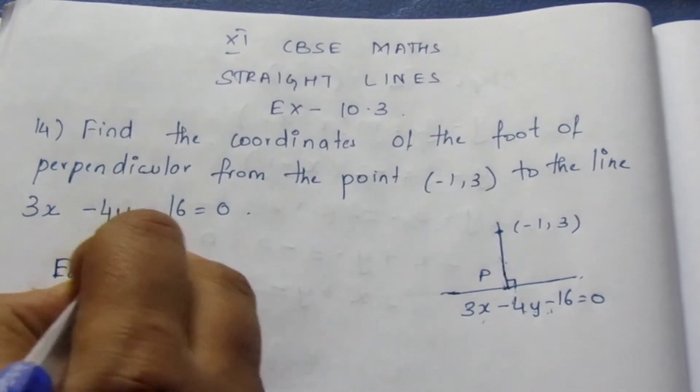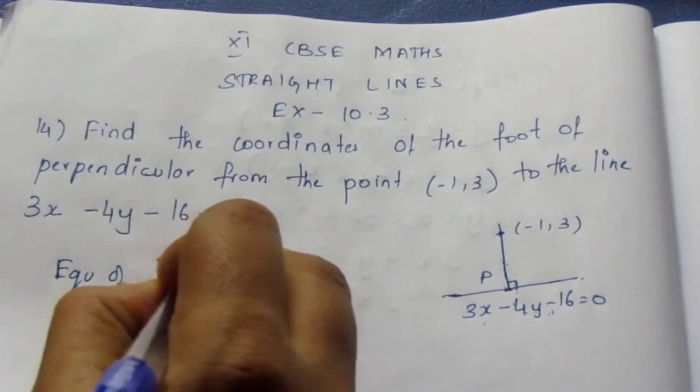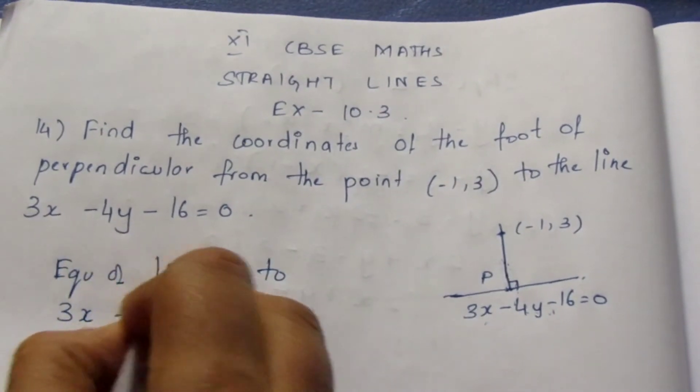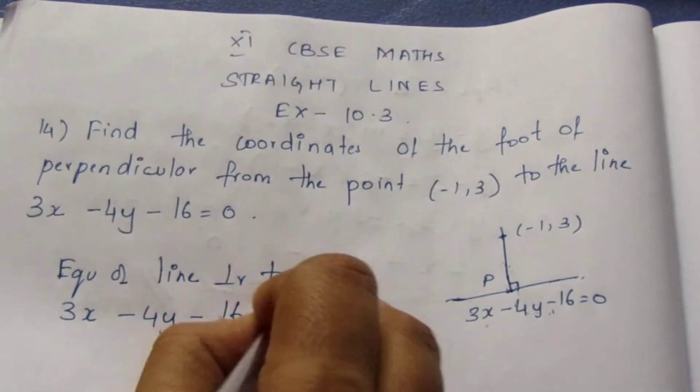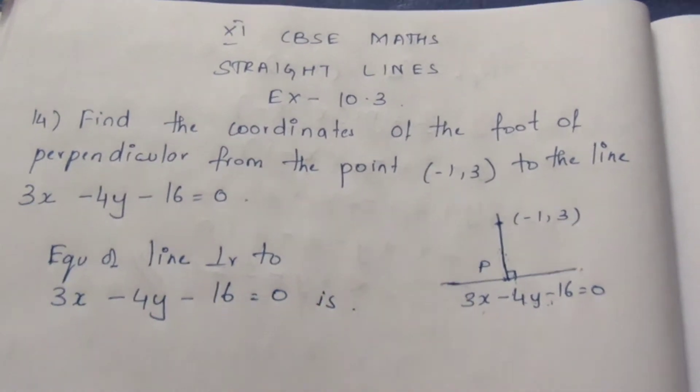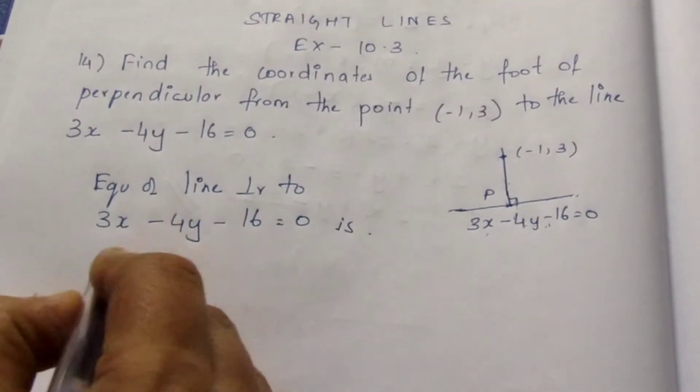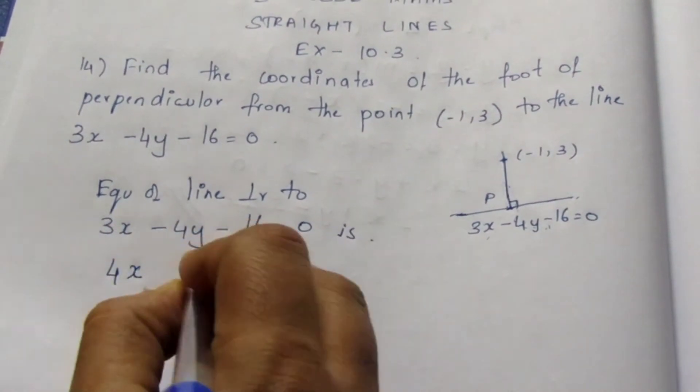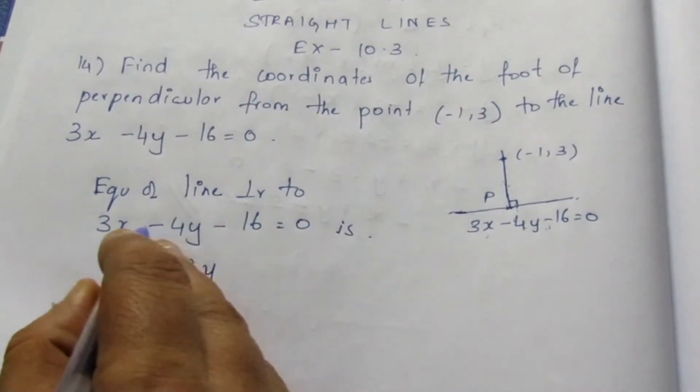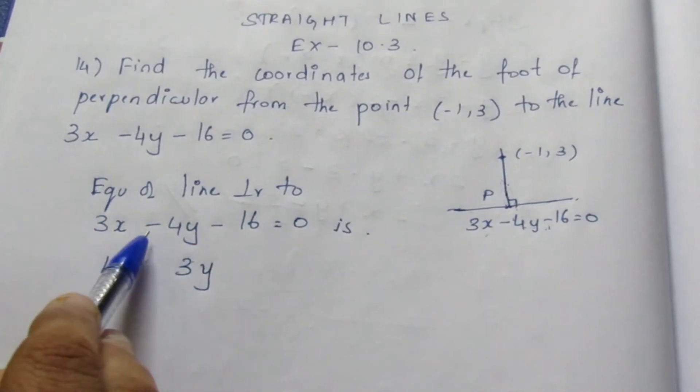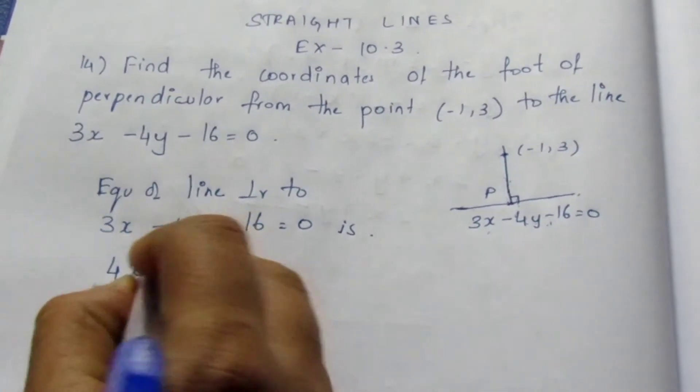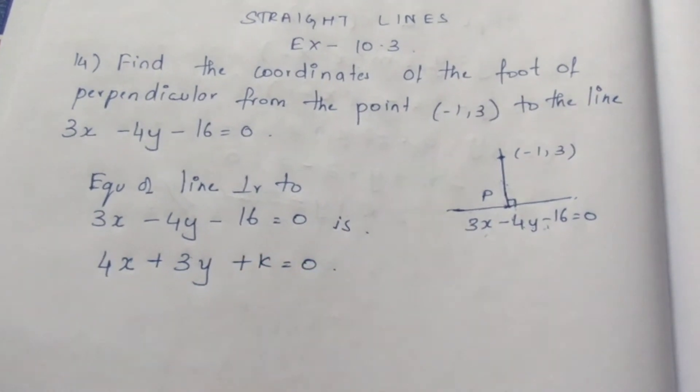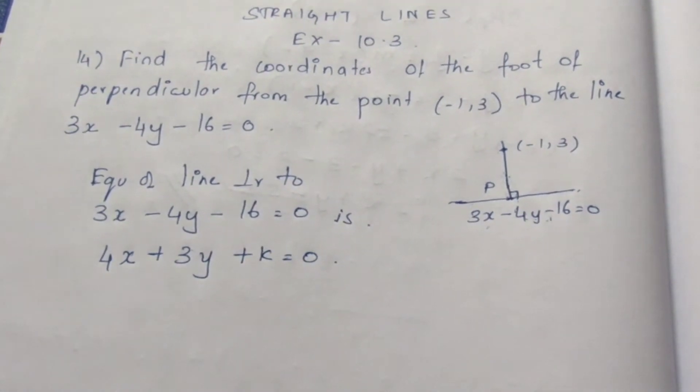So equation of line perpendicular to 3x - 4y - 16 = 0 is, remember that for a perpendicular, the coefficient of x and y transfers. Here it becomes 4x, here it becomes 3y. Now the sign, you need to change the sign of y. If it is minus, we need to change to plus. And the constant term varies. So you need to write any constant term, I am writing it to be k.